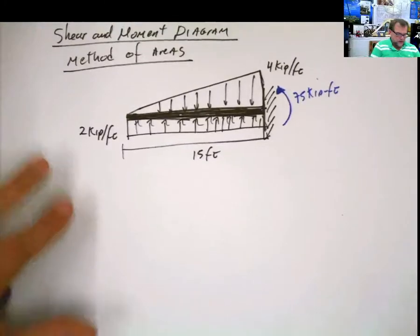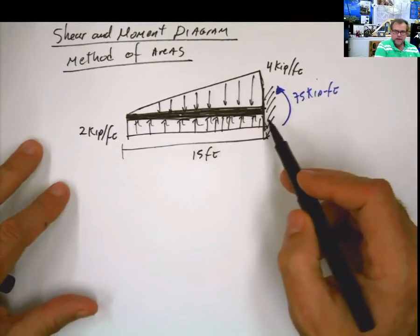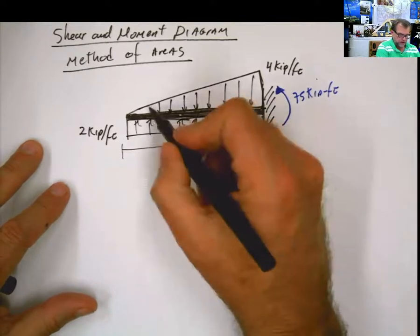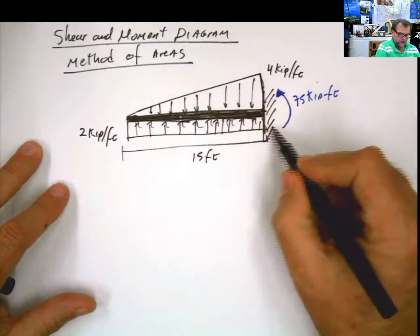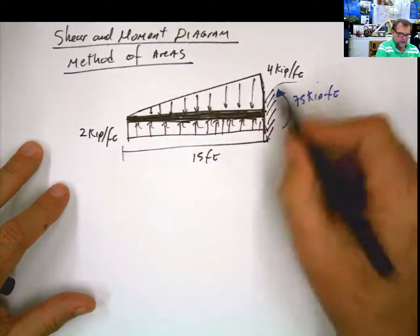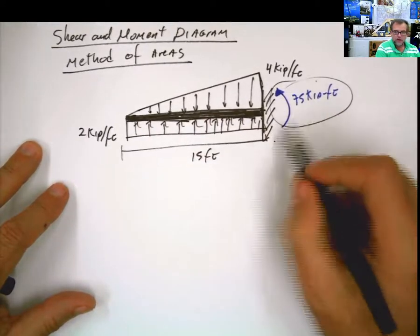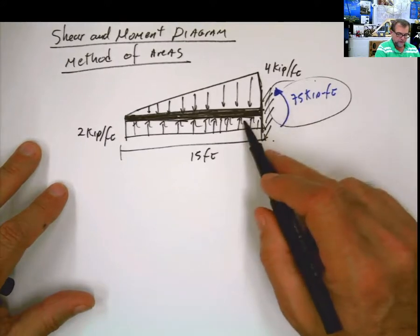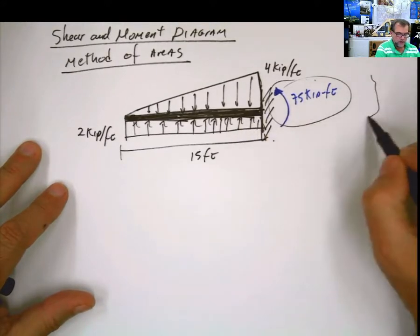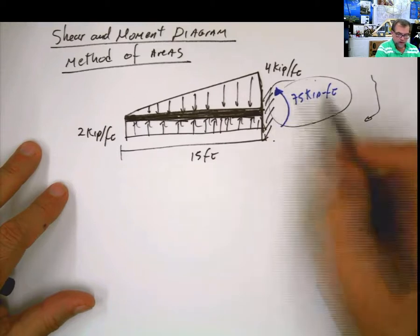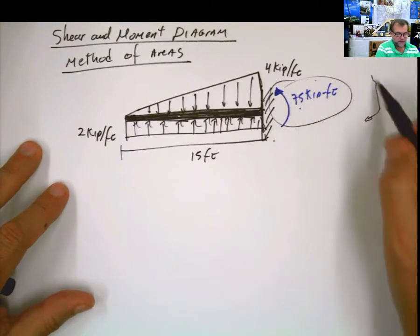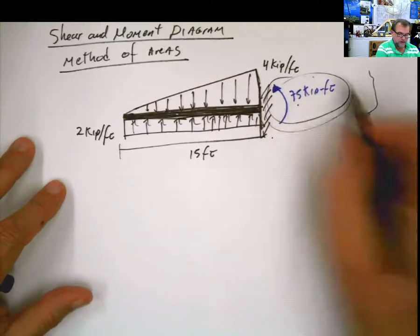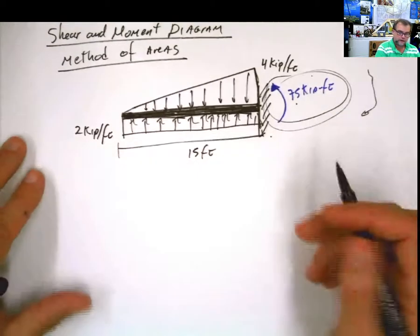This is the last part of the videos. It's the same problem I was doing before — a triangular load on top and a rectangular load at the bottom. This moment is just the reaction at this support. Be careful: in the two previous videos, I left the moment in the other direction. The moment goes in this direction; otherwise it doesn't make sense because the diagram wouldn't close at zero. This was just a sign error in the previous video.